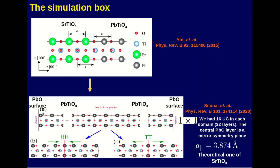Our surfaces are lead-oxide terminated, because lead-oxide is the only stable surface termination found in first-principles calculations. We employed a vacuum of around eight unit cells and simulated the domain structure with a 1×1 supercell periodically repeated in space. The central layer — which is lead-oxide — serves as a mirror symmetry plane. We used 16 unit cells on the right domain and 16 unit cells on the left domain.